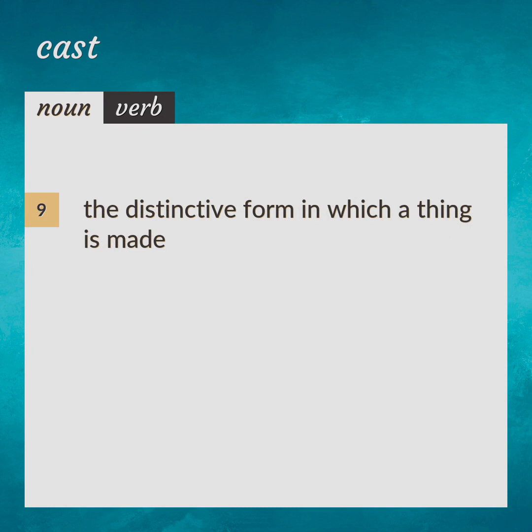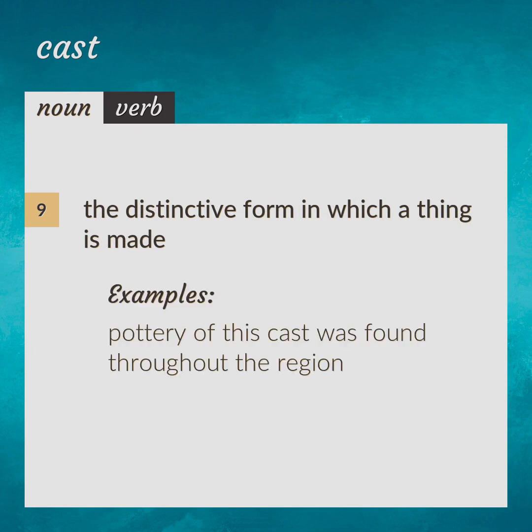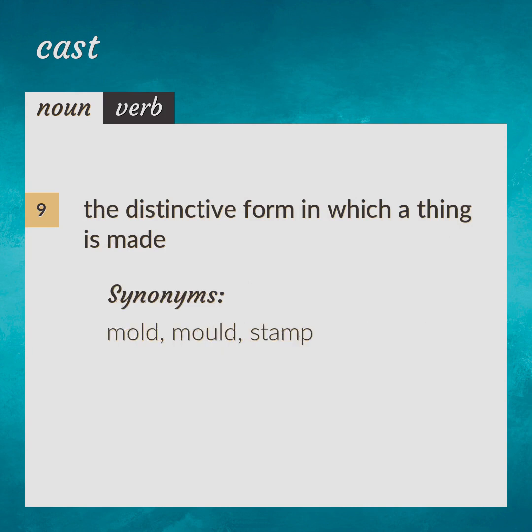The distinctive form in which a thing is made. Example: pottery of this cast was found throughout the region. Synonyms: mold, stamp.